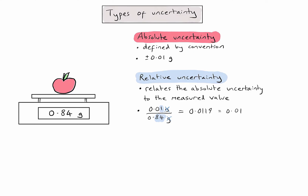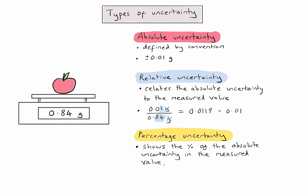The third type of uncertainty we need to consider is percentage uncertainty, and this calculation shows me the percentage of the absolute uncertainty in the measured value. Whenever I'm asked to calculate the percentage of one value in another, I take that value, divide it by the measured value, and multiply by 100. So all I've done here is taken the relative uncertainty and multiplied by 100.